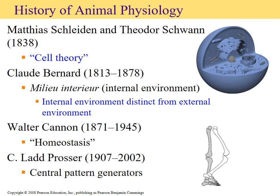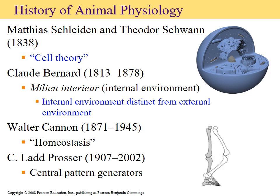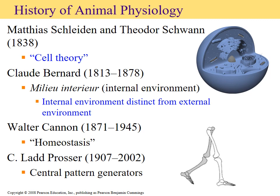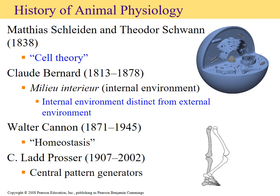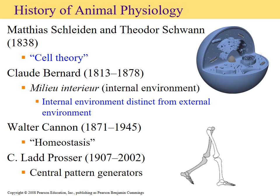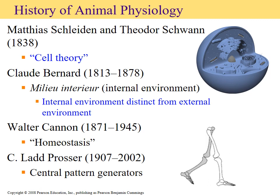Schleiden and Schwann are credited with forming the cell theory. Based on their research, they stipulated that the cell is the functioning unit of life, and all organisms are composed of at least one or more cells. The third tenet of cell theory came along a little bit later, aided by the discovery of the microscope: all cells come from pre-existing cells.